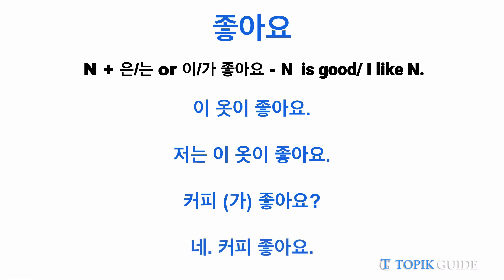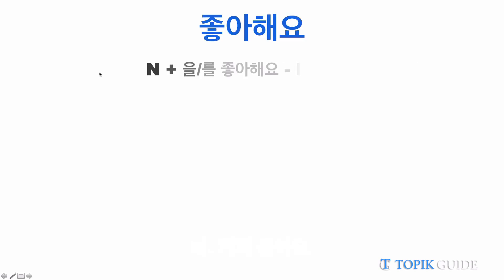The thing to remember is: with chawayo, you will always add 은/는 or 이/가 with the preceding noun. Now with chawahayo, you add 을 or 를 with the noun before chawahayo, because chawahayo is a verb meaning 'to like,' so the noun preceding it will be an object and we add the object particle to it.